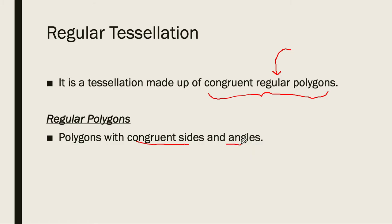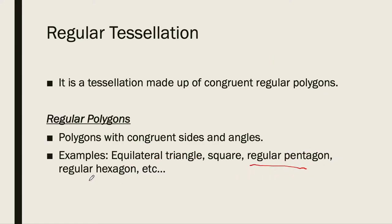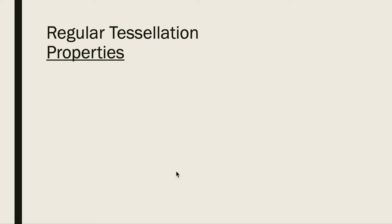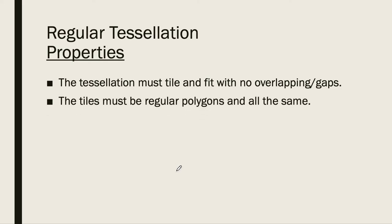Regular polygons are polygons with congruent sides and angles. Some examples are the equilateral triangle, the square, the regular pentagon, and the regular hexagon — just put the word 'regular' and it will be a regular polygon. A regular tessellation must tile and fit with no overlapping and no gaps, the tiles must be regular polygons and all the same.